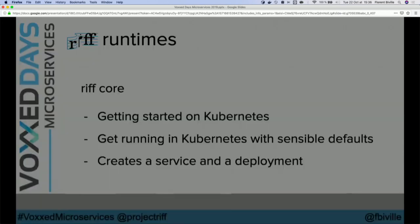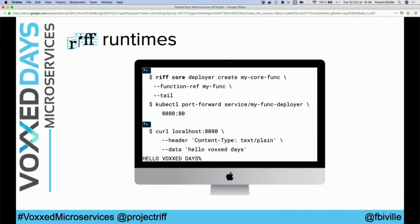So let's see that. With the CLI, you say you want to create — in this case it's a core runtime, so it's Reef Core as a prefix — you want to create a deployer, give it a name, give it a function ref. Remember when I gave a name to my function — that's the name I reuse here. Then I can tail the logs if I want. By default, the service that is created is internal to the cluster, and I'm running it on Google Container Engine. So I'm using port-forward to open a local port, as if I had deployed the function locally. That's just a little shortcut for the demo.